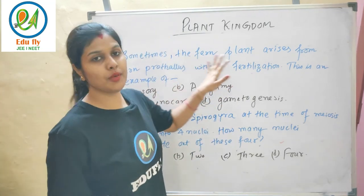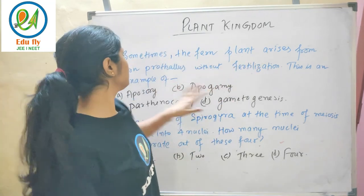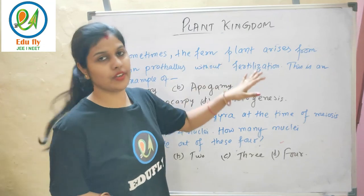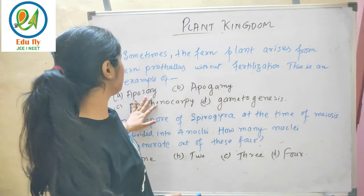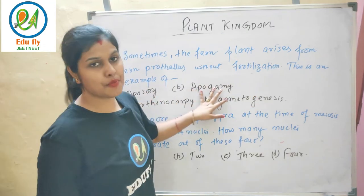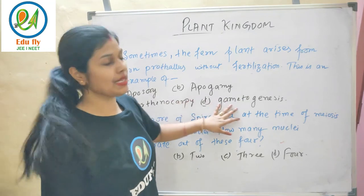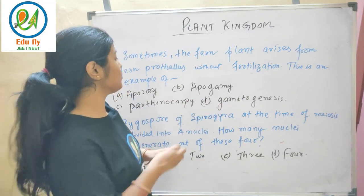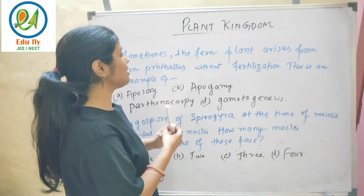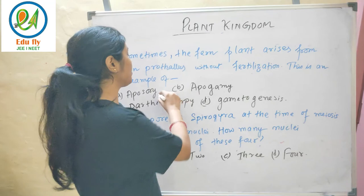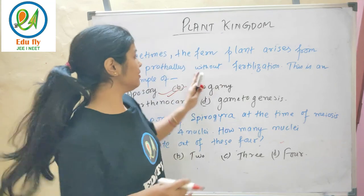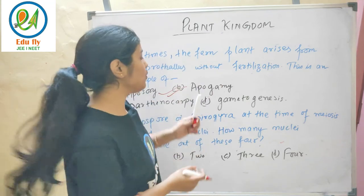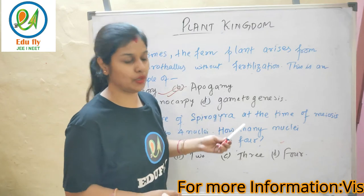Sometimes the fern plant arises from the prothallus without fertilization. This is an example of apogamy. Whenever a fern plant arises without fertilization, that phenomenon is called apogamy.